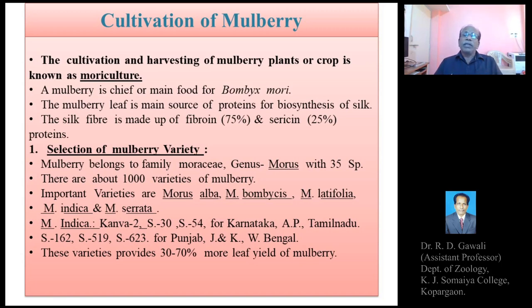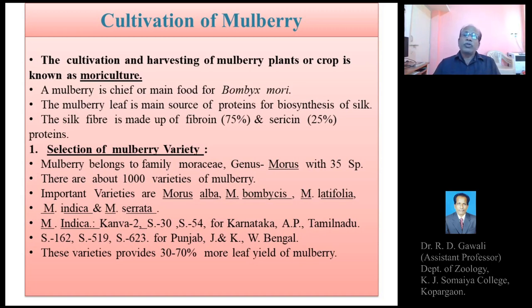Whatever proteins are present in the Mulberry leaf, 75% of them are transferred into the silk thread or silk fiber. The proteins present in the silk thread are a fibrous protein called fibroin and a gelatinous protein sericin. The silk fiber is made up of fibroin, which forms the central core and contributes 75% of the thickness of the silk thread, while the outer gelatinous coat composed of sericin contributes 25% of the thickness.